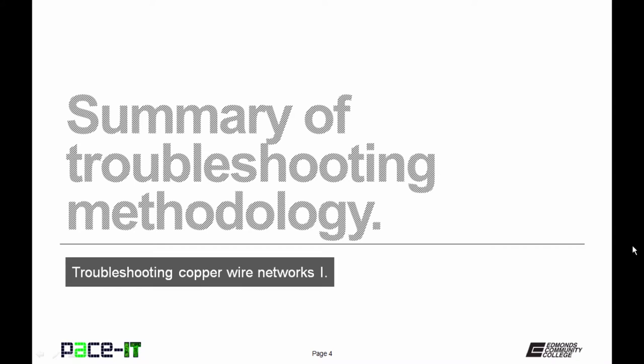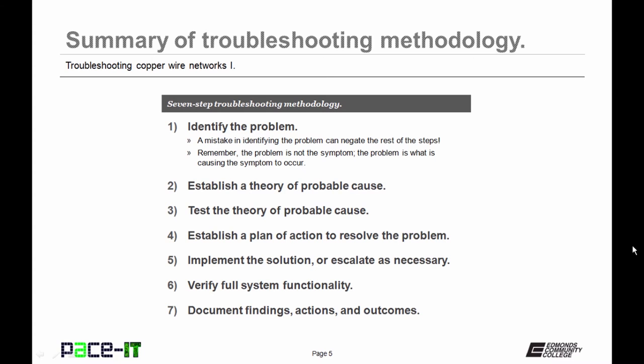I'm going to begin with a summary of the troubleshooting methodology. CompTIA recommends a seven-step troubleshooting methodology. Step one is to identify the problem. A mistake in identifying the problem can negate the rest of the steps and remember the problem is not the symptom. The problem is what is causing the symptom to occur. Step two, establish a theory of probable cause.